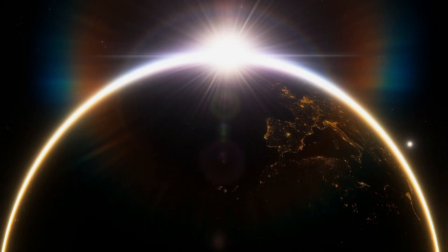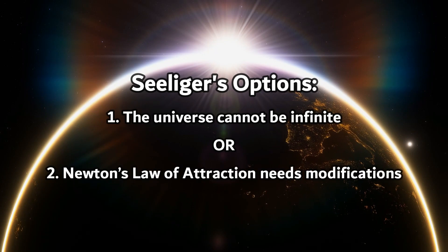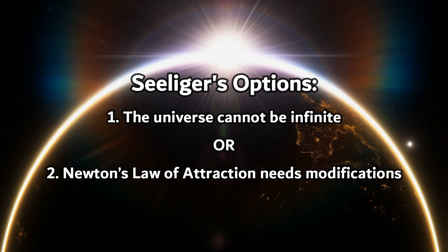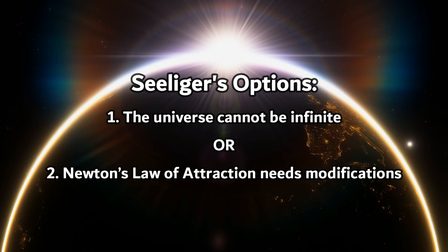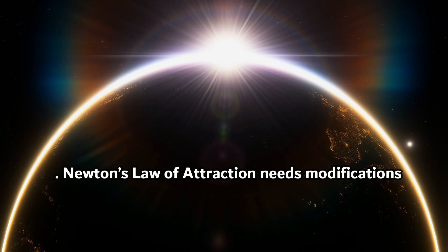This left Seeliger with two options. One, infer that the universe cannot be infinite, such that the gravitational force of the universe on any set point is not a net zero. Or two, Newton's law of attraction needs modifications.